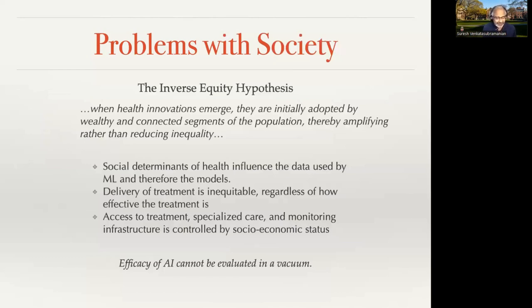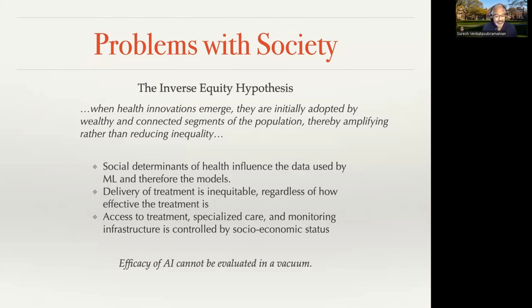A broader question that goes back to the title and the premise for the talk is what is called the inverse equity hypothesis. When health innovations emerge, they're initially adopted by wealthy, connected segments of the population, thereby amplifying rather than reducing inequality. So even if your system works well, even if you've made sure you've trained it correctly, even if you've managed to reduce disparities in the training process as much as possible — there are still inequities that appear just because the broader infrastructure of healthcare delivery in this country, because of decades and centuries of history, is inequitable. This has been seen over and over again in the case of COVID and delivery of care, testing facilities, vaccines, and so on. The message is not that we can't solve all of society's problems, but that if we are making claims about the efficacy of AI systems, we cannot evaluate these claims in a vacuum.